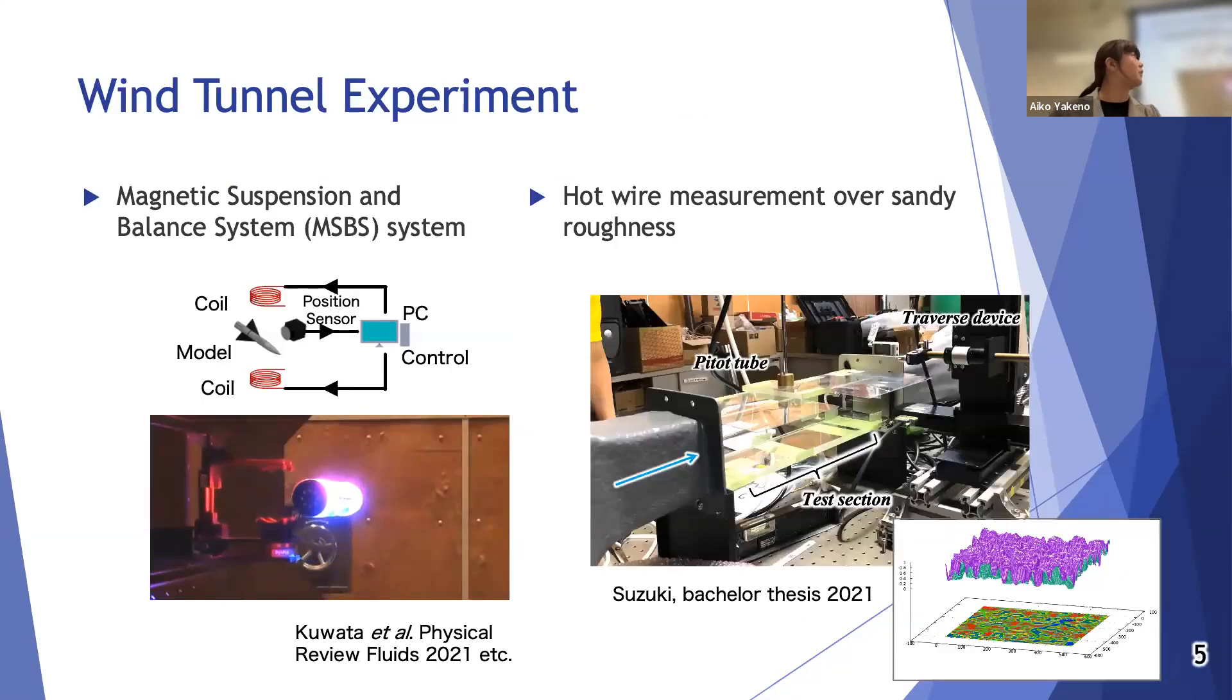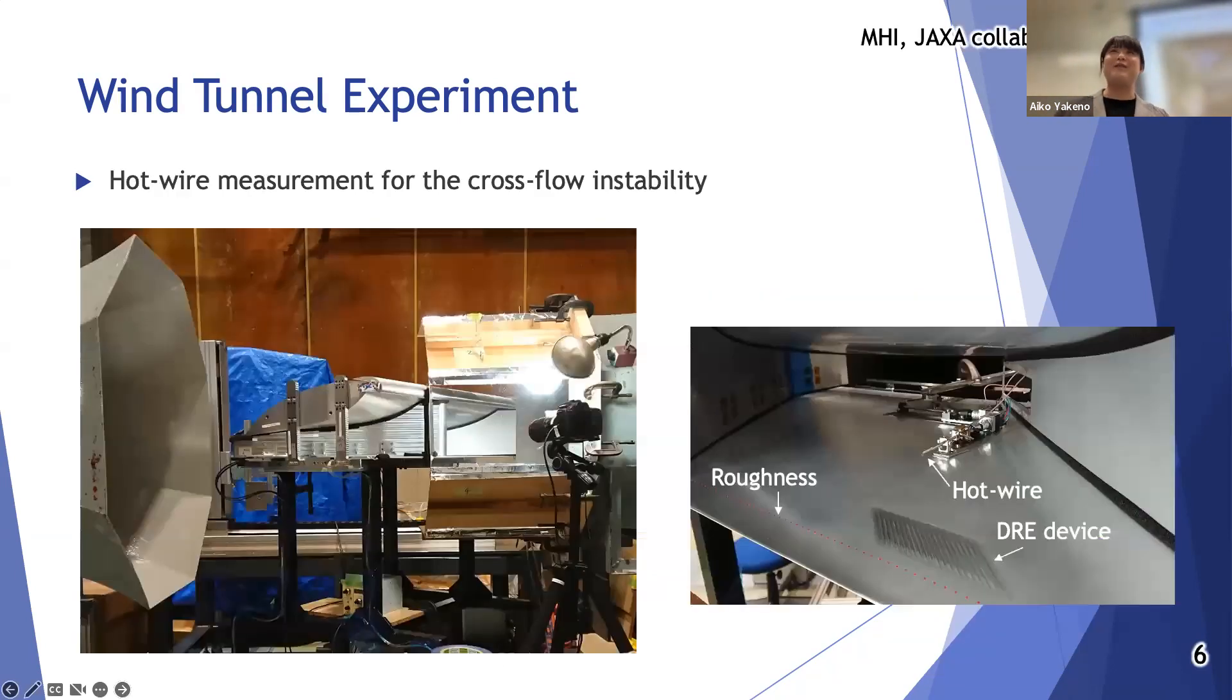We investigate the turbulence to make an airplane unstable when it takes off and runs in the Haneda Airport. We also investigate fundamental flow physics using wind tunnels. We developed a special tool like magnetic suspension and balance system, MSBS we call, to float a model by magnetic force to measure the drag directly.